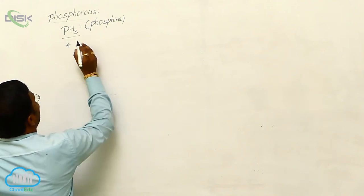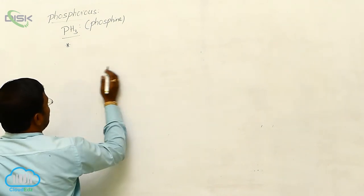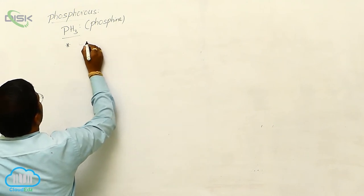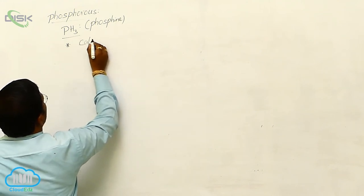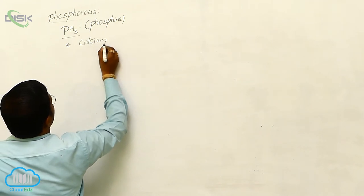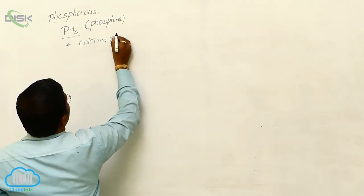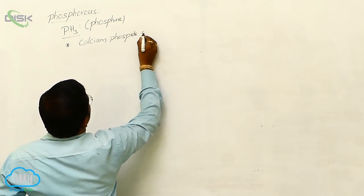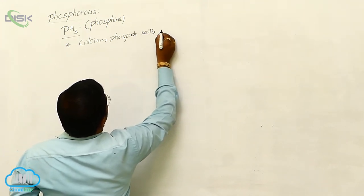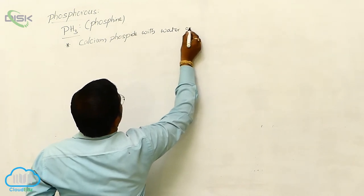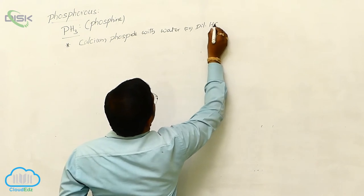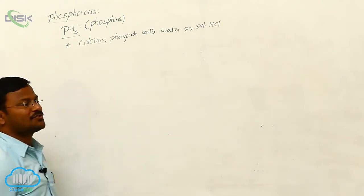Here, phosphine is produced from the reaction between calcium phosphide with water or dilute hydrochloric acid (HCl).